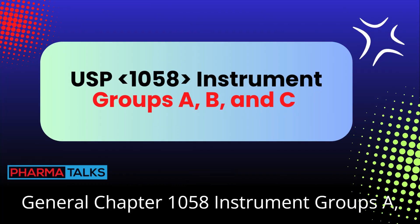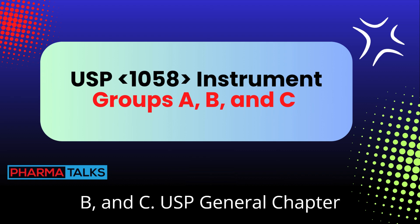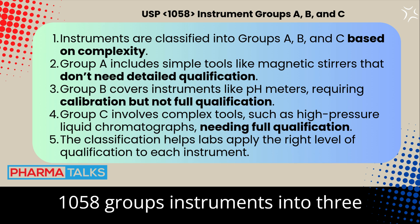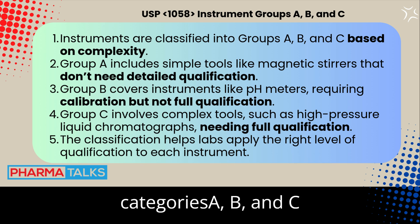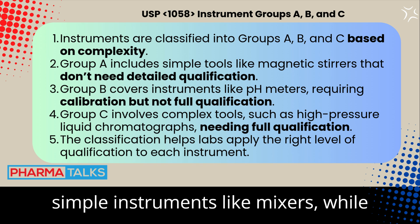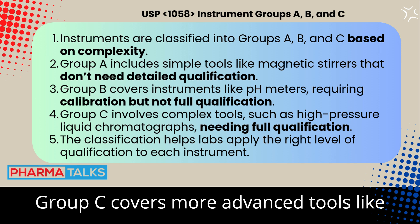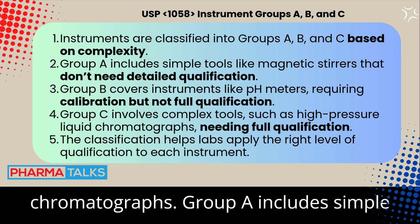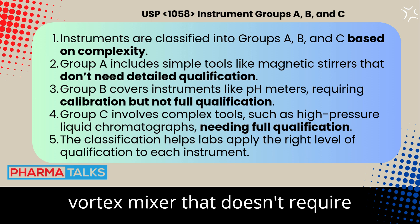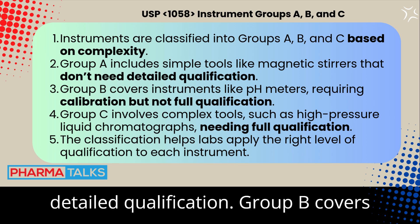USP General Chapter 1058 groups instruments into three categories — A, B, and C — based on complexity. Group A includes simple apparatus like a magnetic stirrer or vortex mixer that doesn't require detailed qualification, while Group C covers more advanced tools like chromatographs.